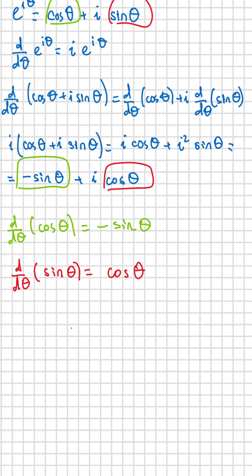In the end, we have derived two beautiful results: the derivative of cosine is negative sine, and the derivative of sine is cosine. All of this, thanks to Euler's elegant formula.